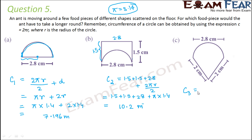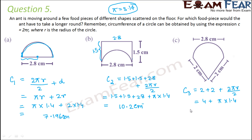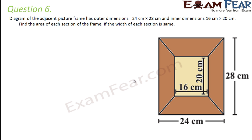Now for the third figure, we find the perimeter similarly. The two straight sides are each 2 cm, and there is again a semicircle. So C3 = 2 + 2 + πr = 4 + π × 1.4, giving approximately 8.396 cm. Comparing all three values, C2 is the greatest, which means the ant has to take a longer round in the second scenario.